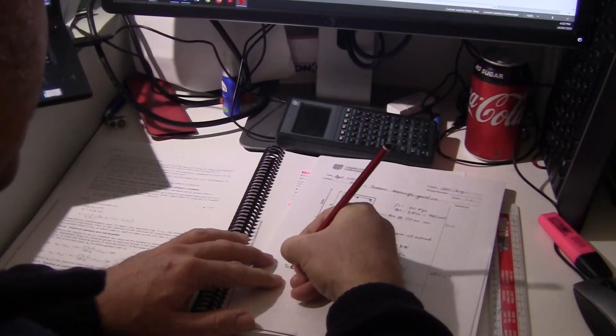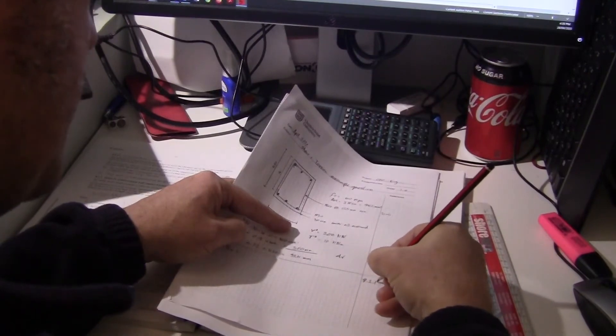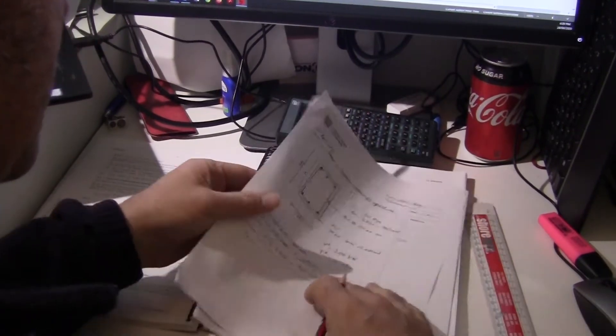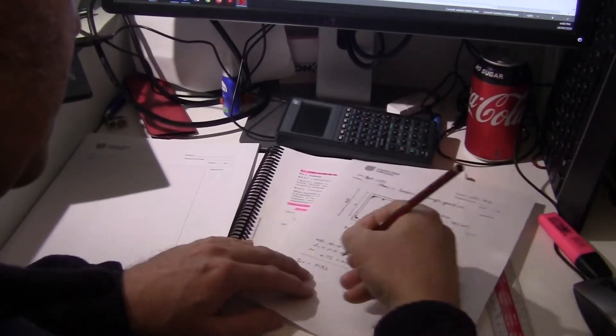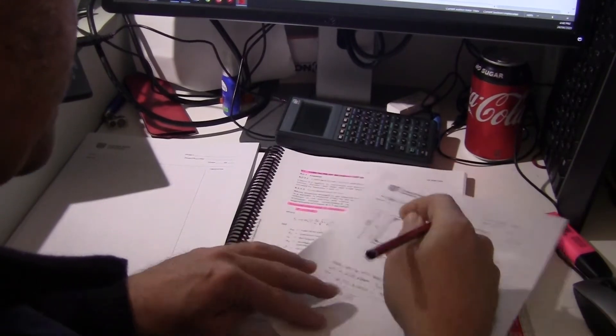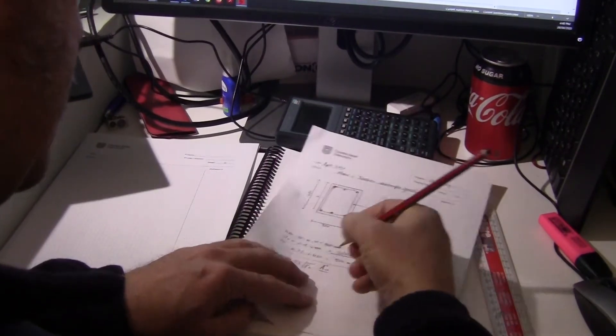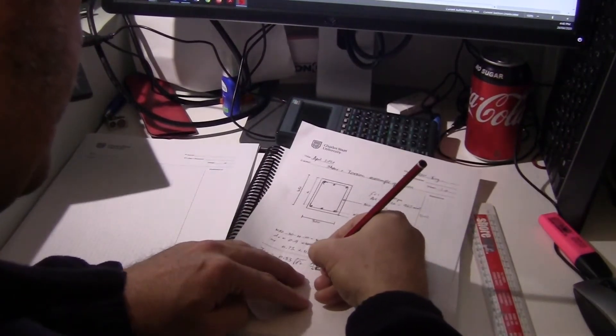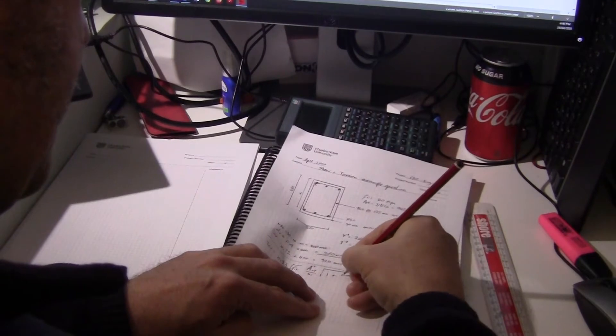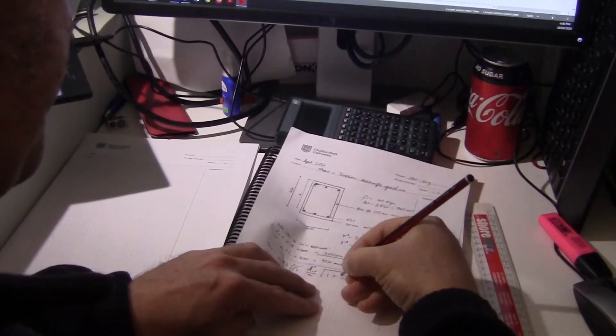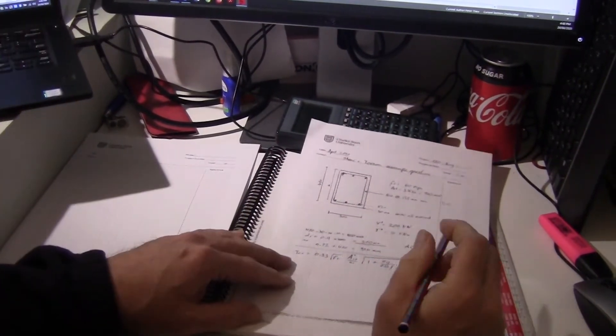So T-cr, and this is from clause 8.2.1.2. T-cr equals 0.33 f-c times a squared cp over u-c times the square root of 1 plus phi cp over 0.33 f-c. All right, let's go find all of those terms.